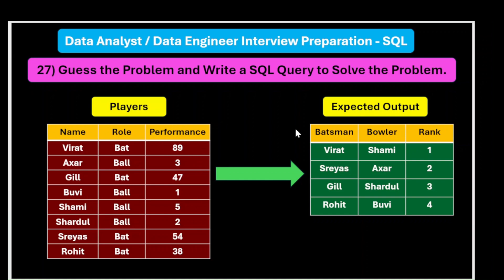We need to convert the format of the input table into the format of the expected output. The input table has player information: name, role, and performance. In the expected output, we have columns for batsman, bowler, and rank.